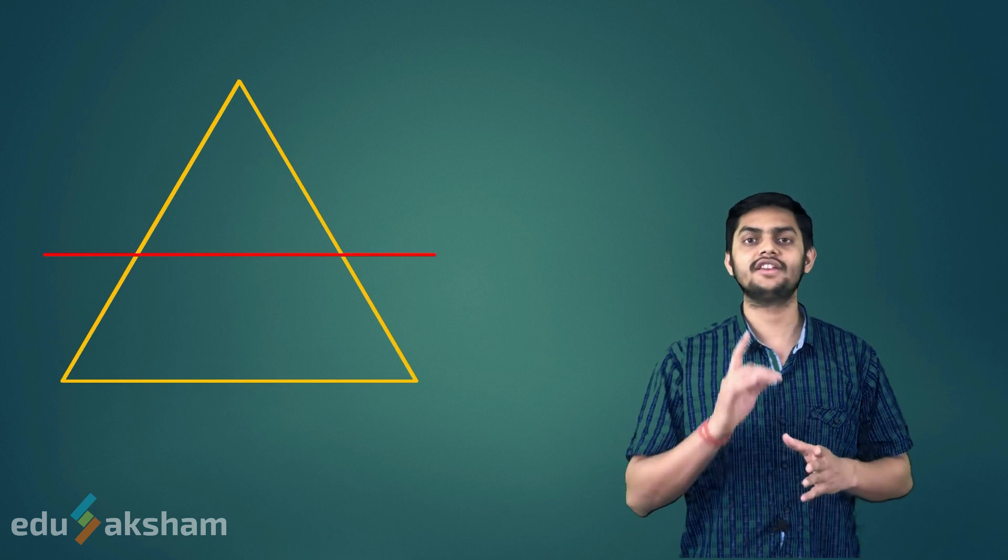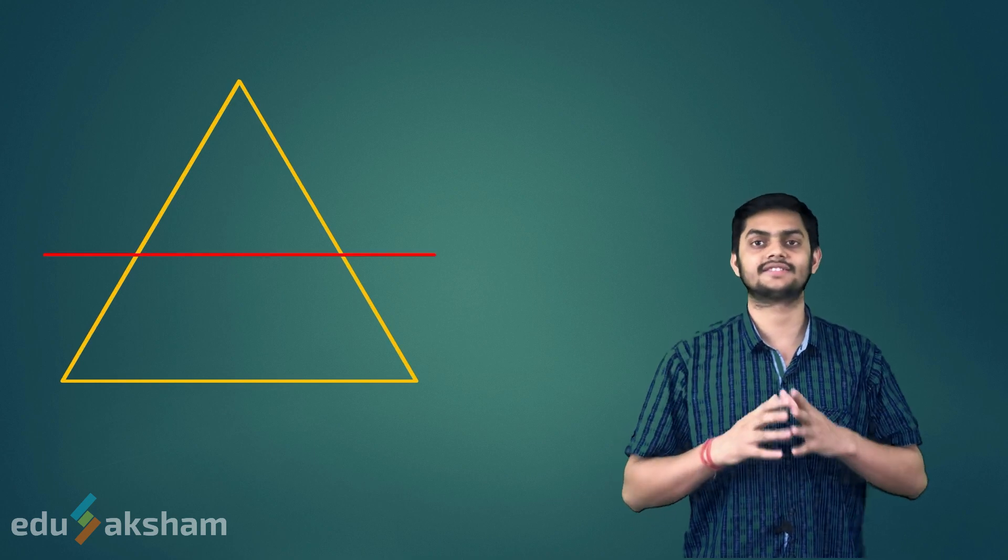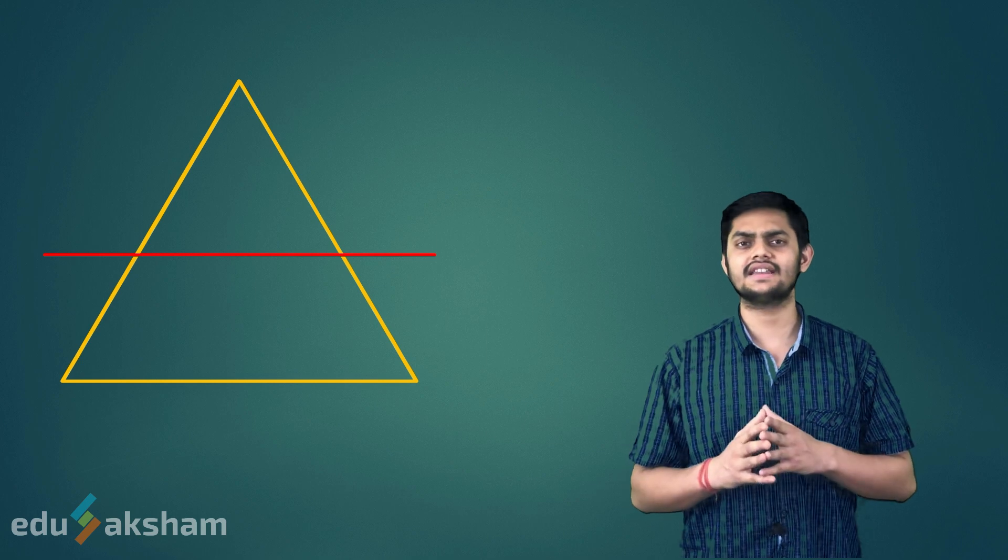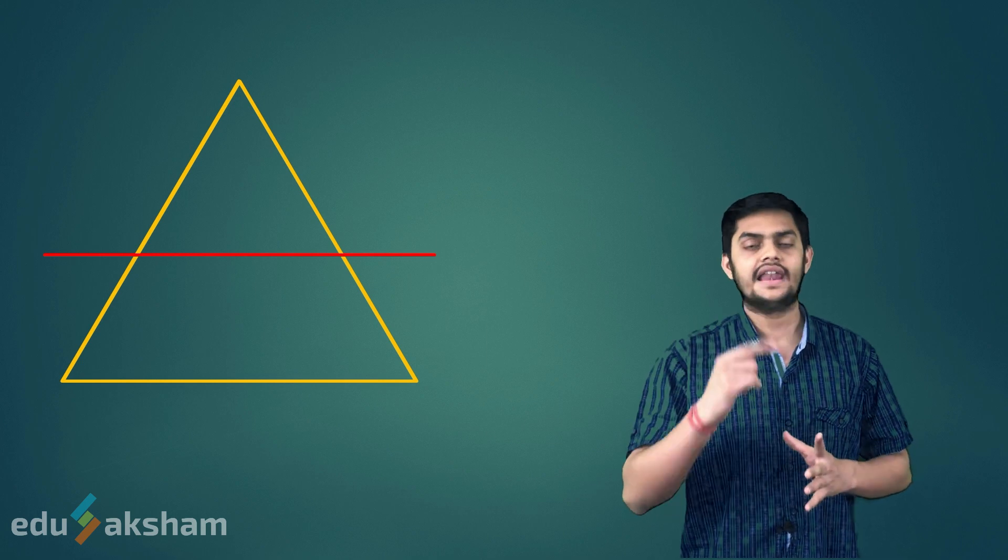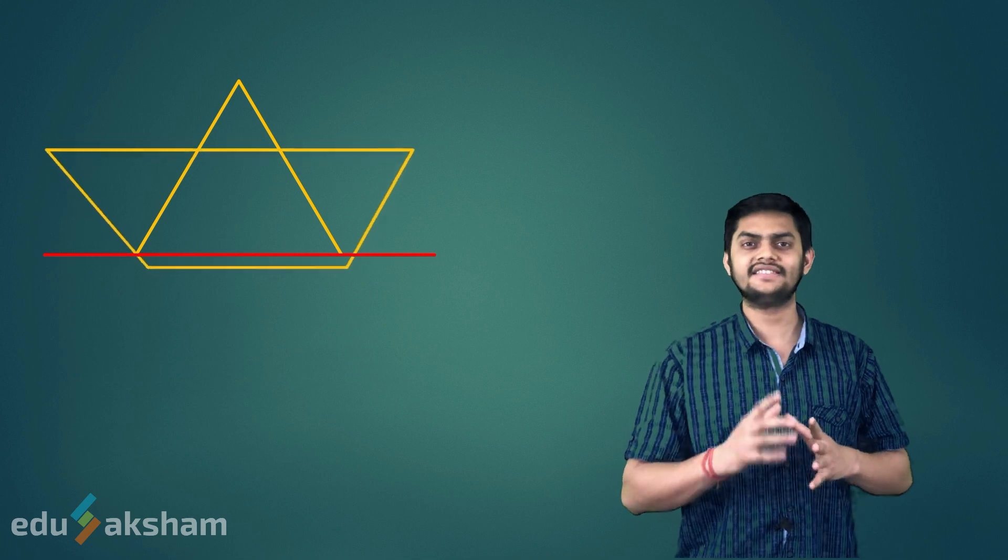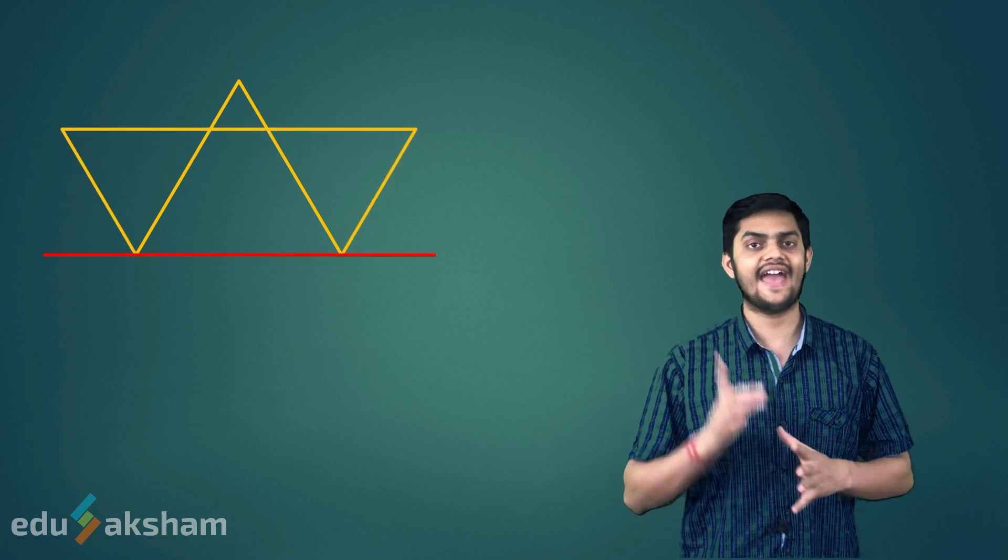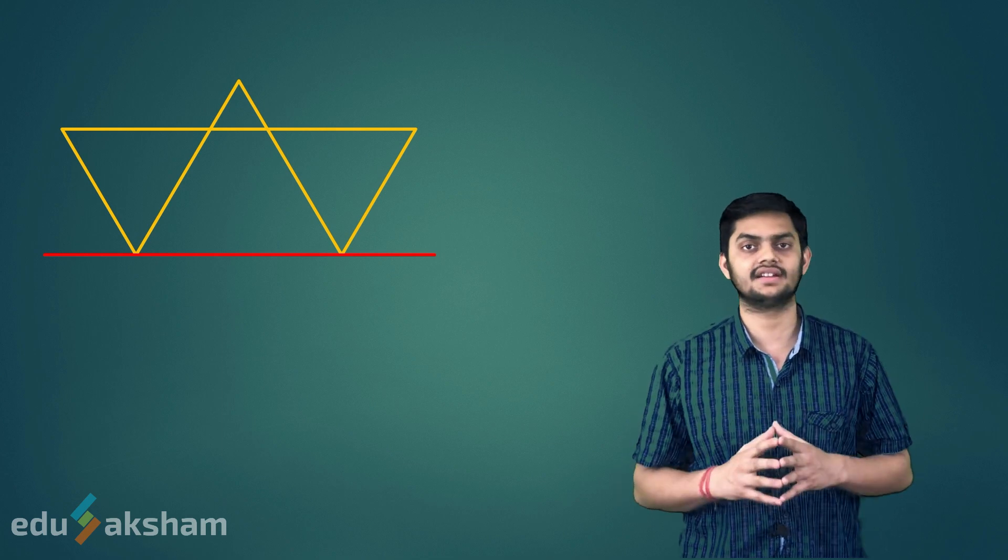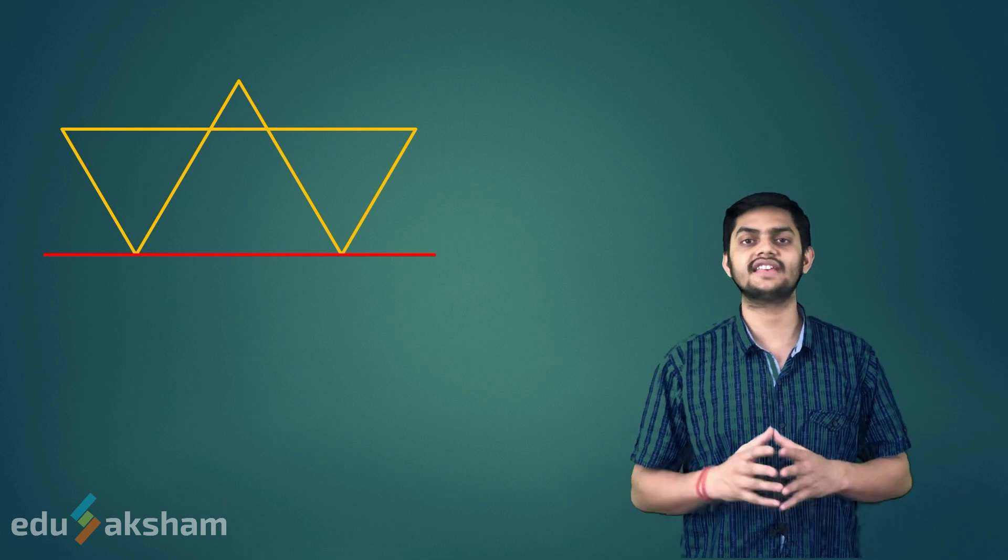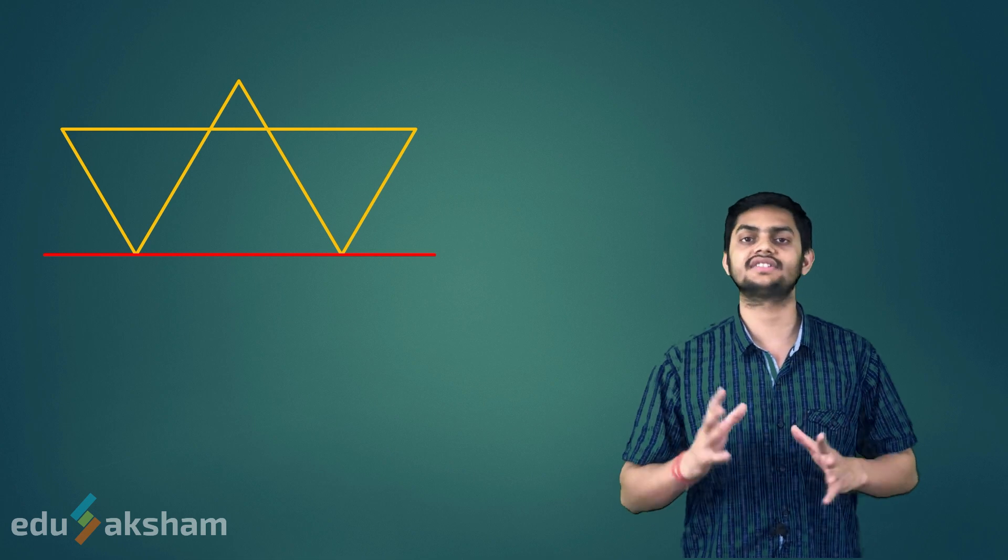Now, we draw a horizontal line like this. Is this line a line of symmetry for this triangle? Let's find. By this line, we get the triangle divided into two parts as shown. But these two parts are not identical. Hence, we can say this line is not a line of symmetry.